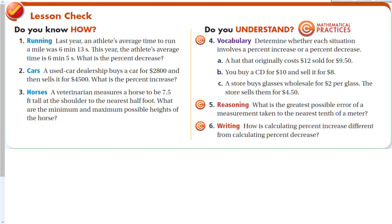Quick lesson check: Last year an athlete's average mile time was 6 minutes 13 seconds; this year it's 6 minutes 5 seconds. What is the percent decrease? The difference is 8 seconds. The key is to convert the original time to seconds: 6 minutes 13 seconds equals 373 seconds. So the percent decrease is 8 over 373, which is approximately 0.02, or 2%.